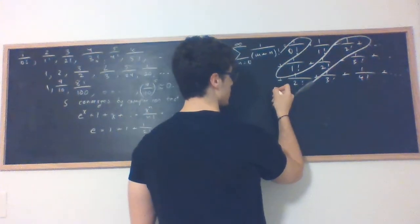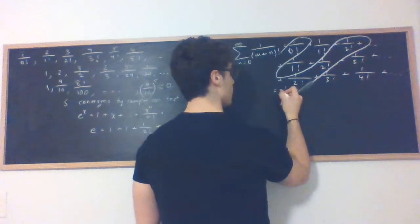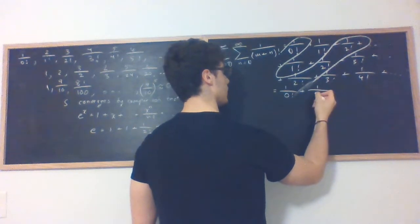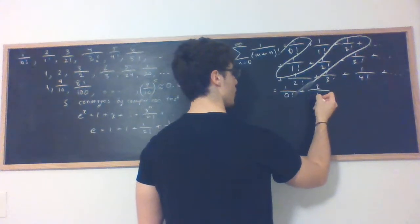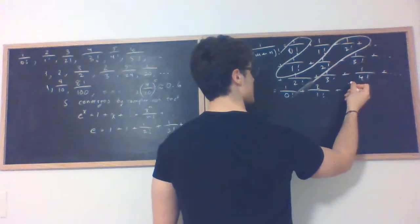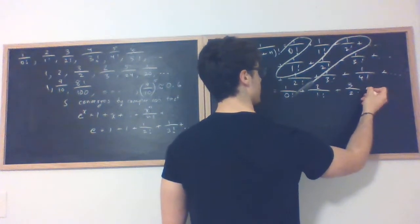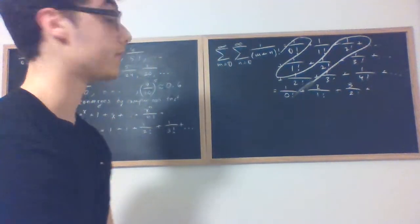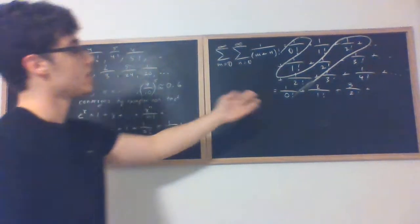So this is going to be equal to 1 over 0 factorial plus 2 over 1 factorial plus 3 over 2 factorial and so forth. And in general it's going to be n plus 1 over n factorial. Now this is our sum.